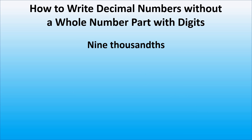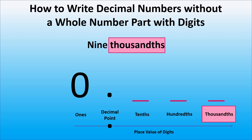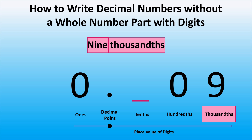This time, let's look at nine thousandths. We will write zero followed by the decimal point as there is no whole number part. Thousandths means that we have three digits to the right of the decimal point. Here we have nine thousandths, so we will write the digit nine in the thousandth place. As we don't have anything in the hundredth place and the tenth place, we will write a digit zero in those places.